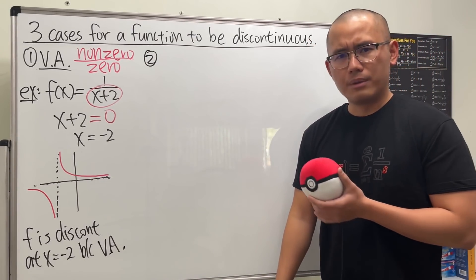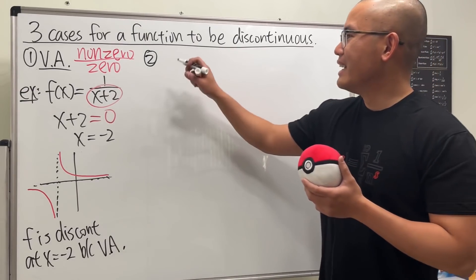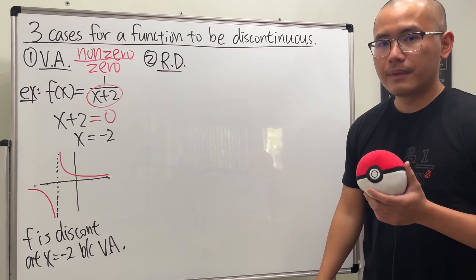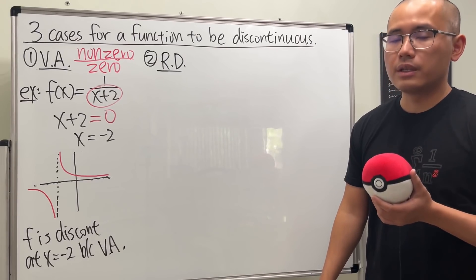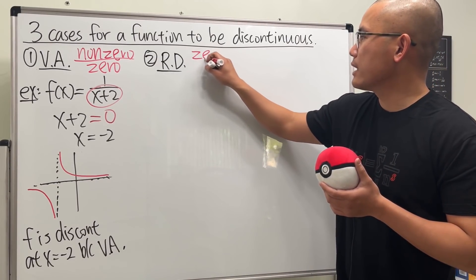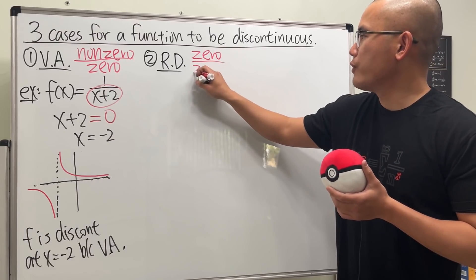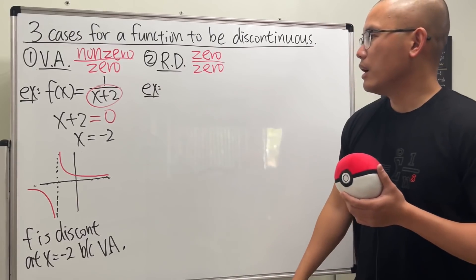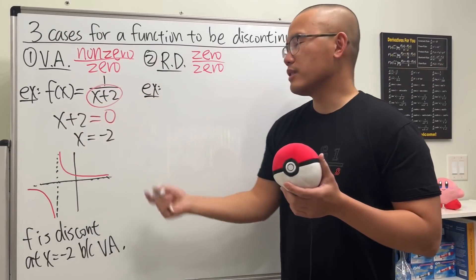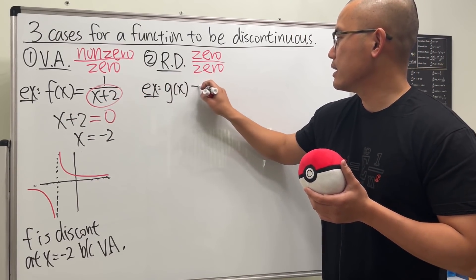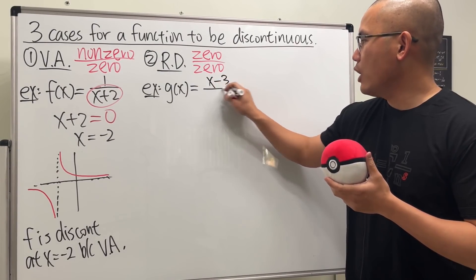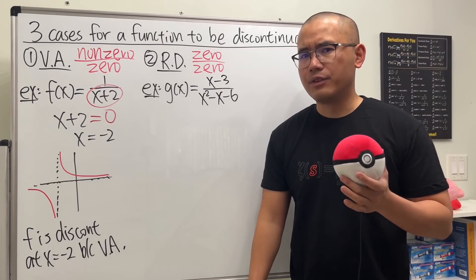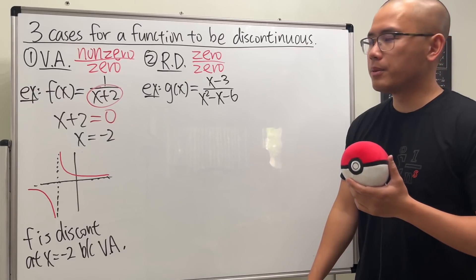Now let's take a look at the second case. This is very similar to the first one but of course very different — this is where the function has a removable discontinuity. Again talking about a rational function, in this case we pay attention to when we have zero over zero. Here's an example: let's say we have function g of x equal to x minus three over x squared minus x minus six. The bottom is actually factorable.